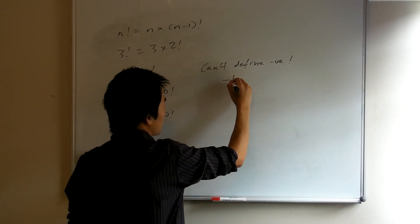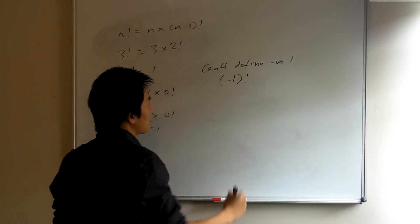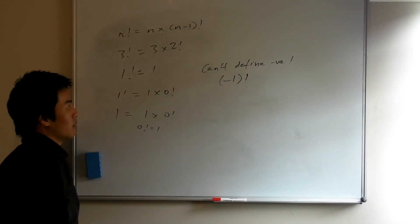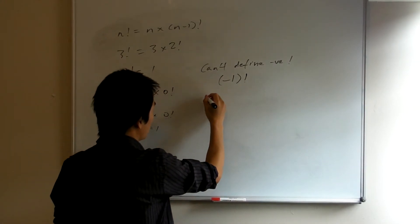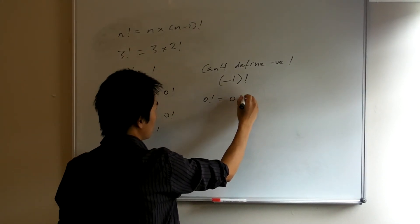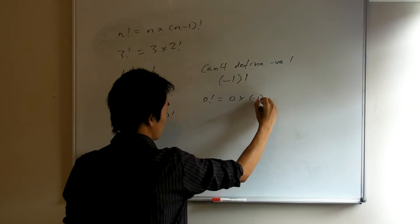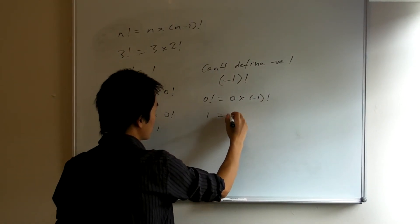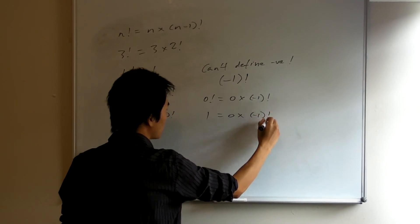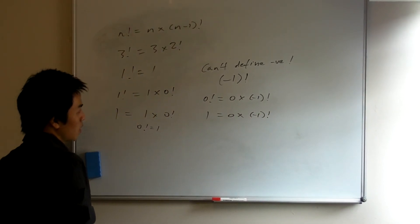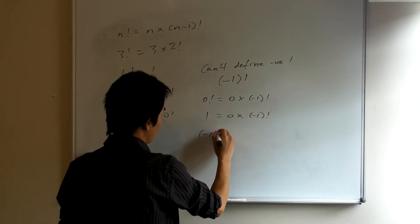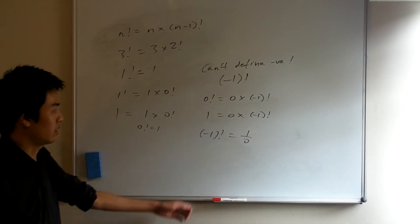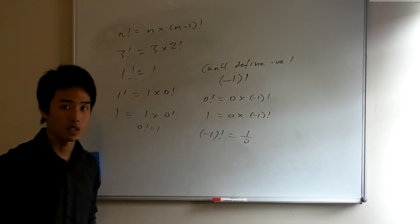So, for example, what does this mean? Minus 1 factorial. Well, whatever it may be, it must satisfy this thing. And now we know that this is 1. This is 0 times minus 1 factorial. And so, negative 1 factorial, the reason why we can't define it is because it's equivalent to defining dividing by 0.